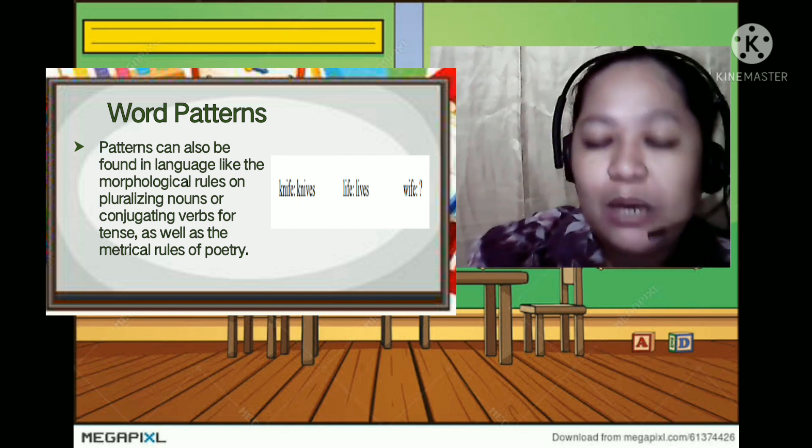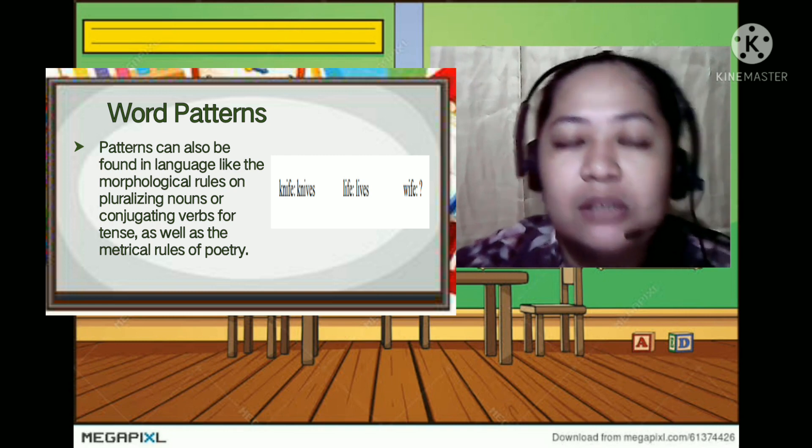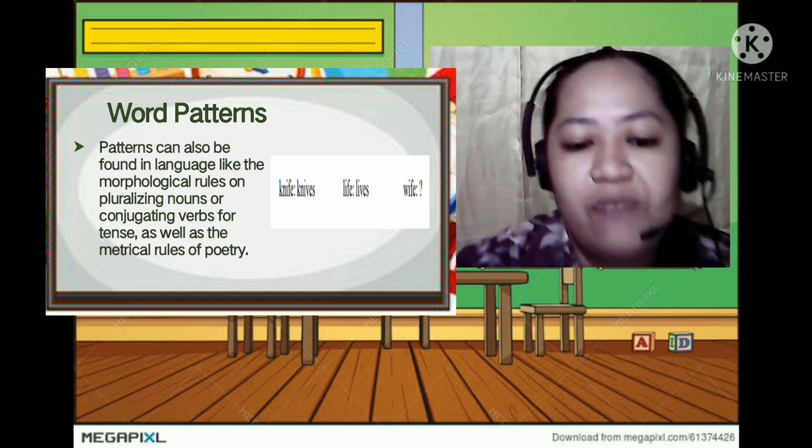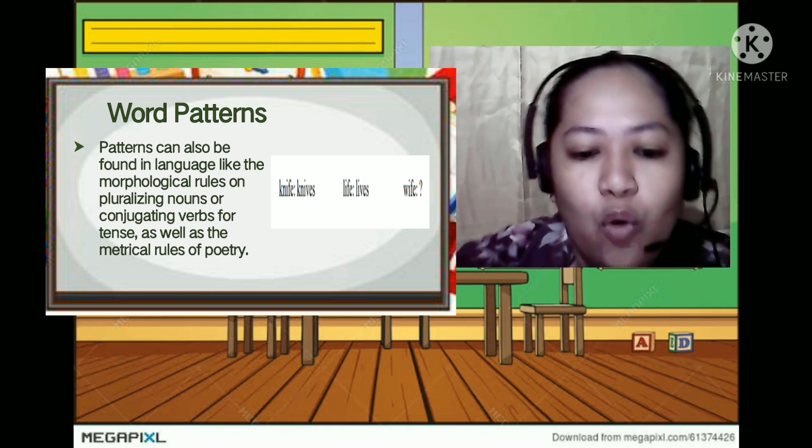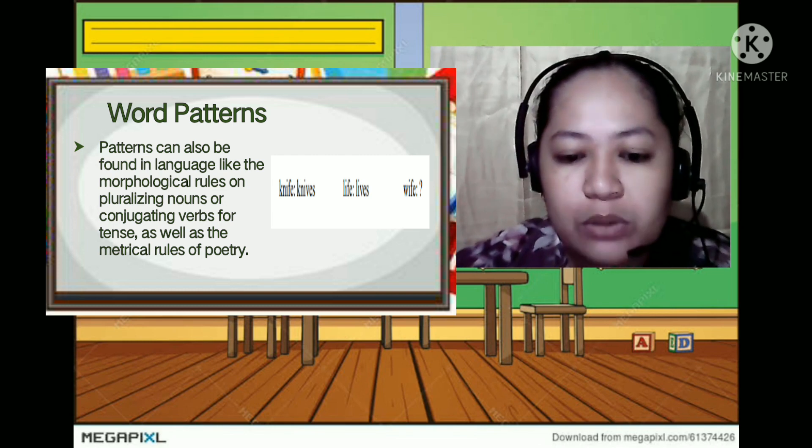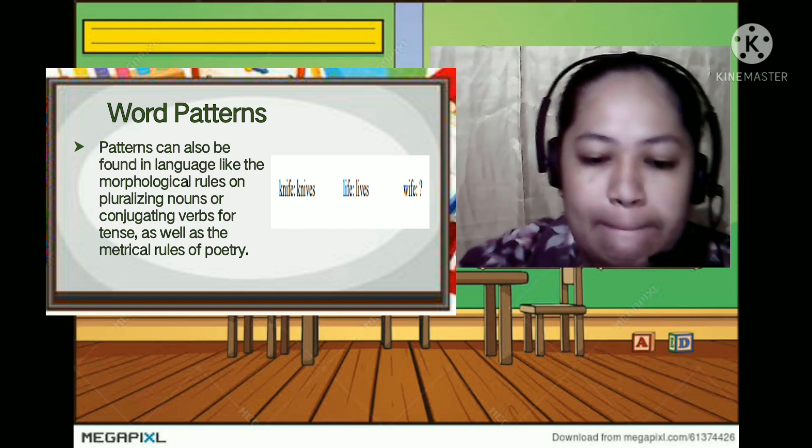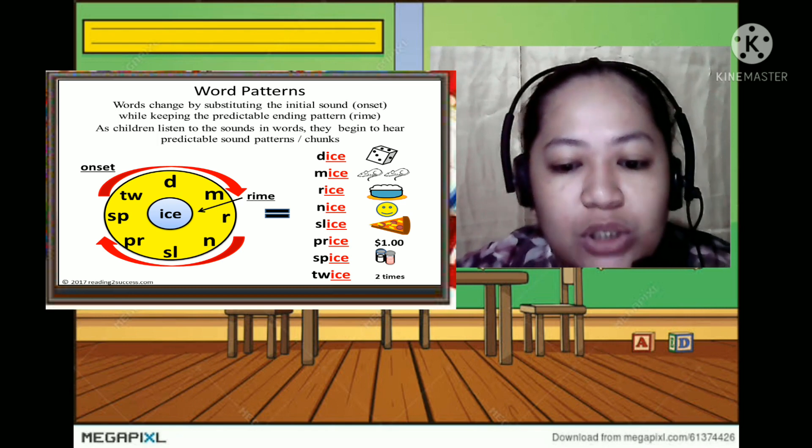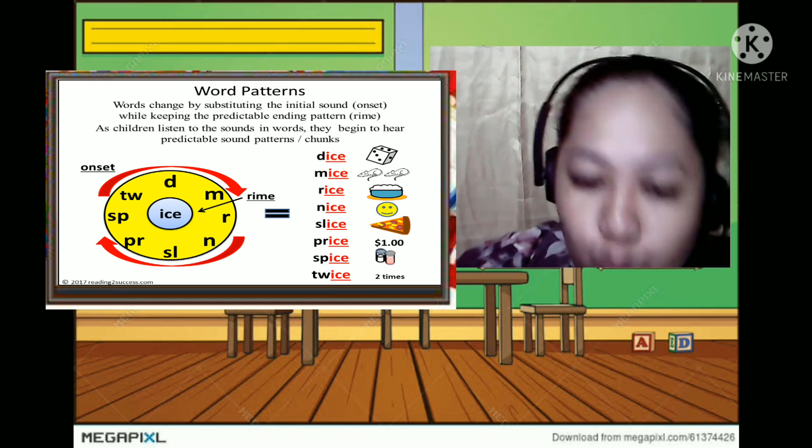So next will be word patterns. Word patterns is usually used in languages. This is actually one of the reasons why mathematics is a language. So patterns can be also found in language like the morphological rules on phrasing nouns or conjugating verbs, word sense, as well as the material rules of poetry. So like for example: knife knives, life lives, then wife wives. So word patterns, word changes by substituting the initial sound while keeping the predictable ending patterns all over, or rhyme.